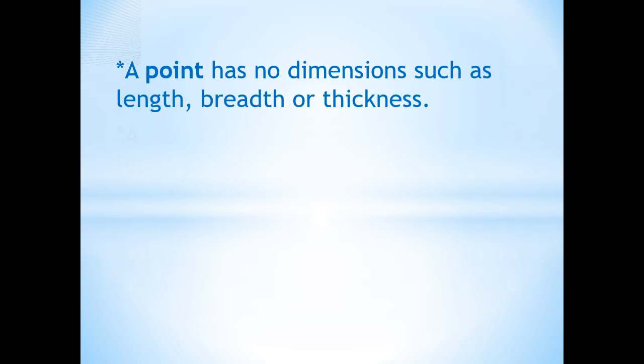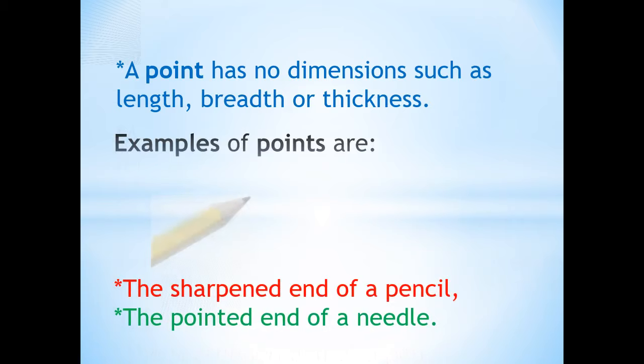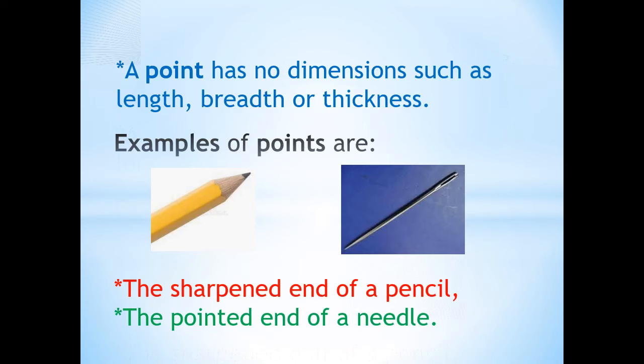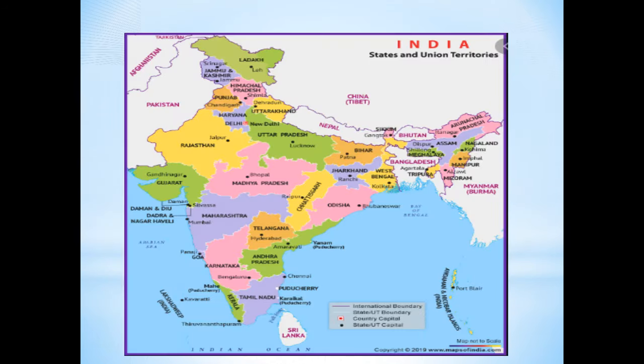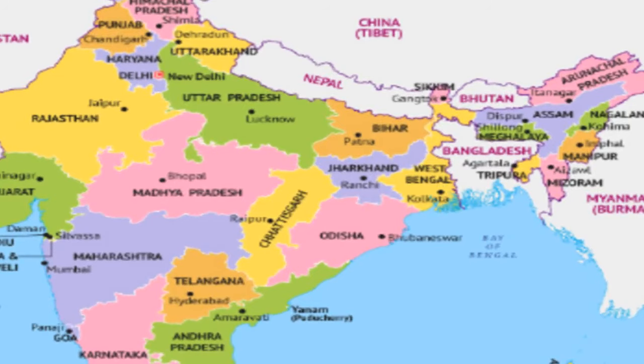A few examples of points are the sharpened end of a pencil and the pointed end of a needle. Now if we have a look on this map, we come to know that we use points to locate states and capitals.